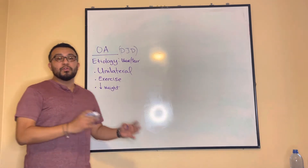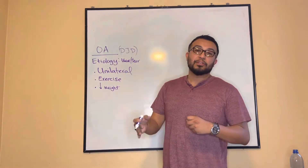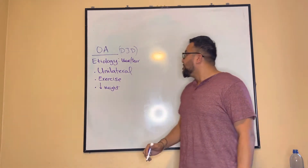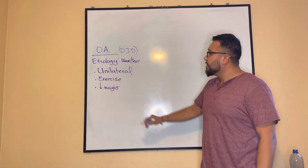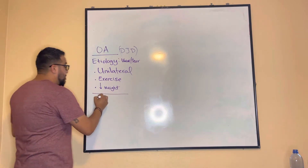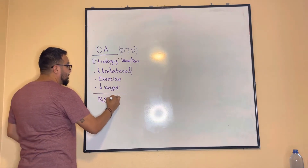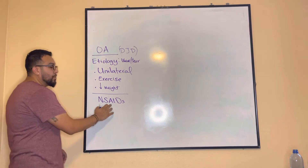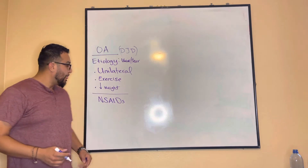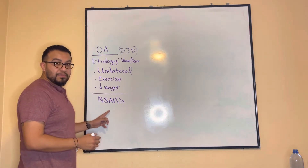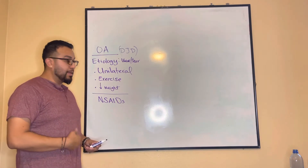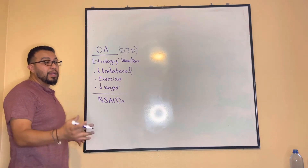If you have a patient who's overweight, educate them to adhere to a dietary plan so they lose weight and stop putting so much strain on those joints. The mainstay medications for OA are your NSAIDs — non-steroidal anti-inflammatory drugs like naproxen and ibuprofen. Always give NSAIDs with food or milk to decrease potential irritation to the gastric lining.